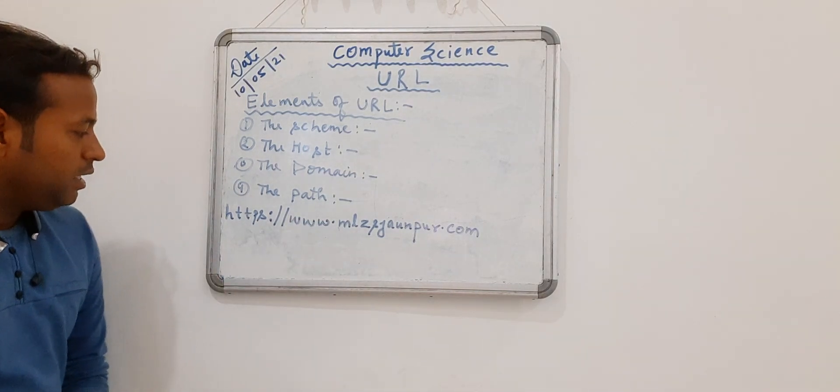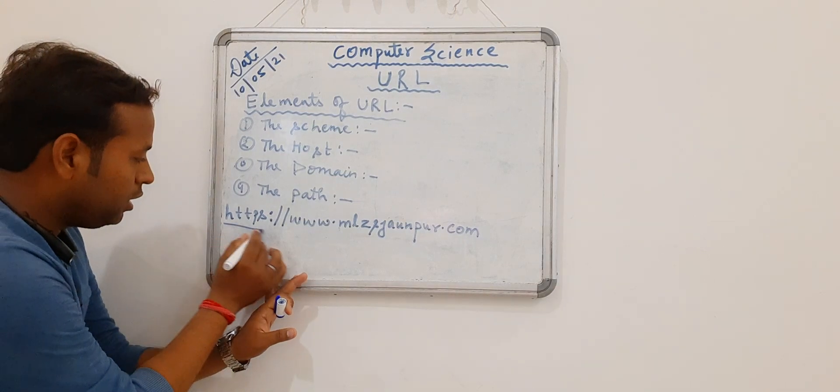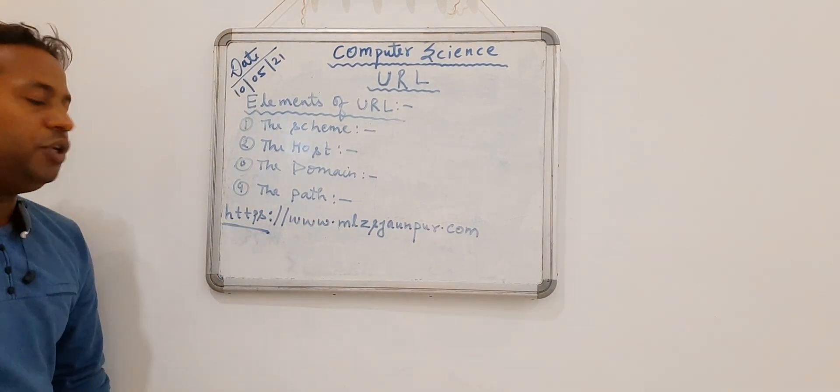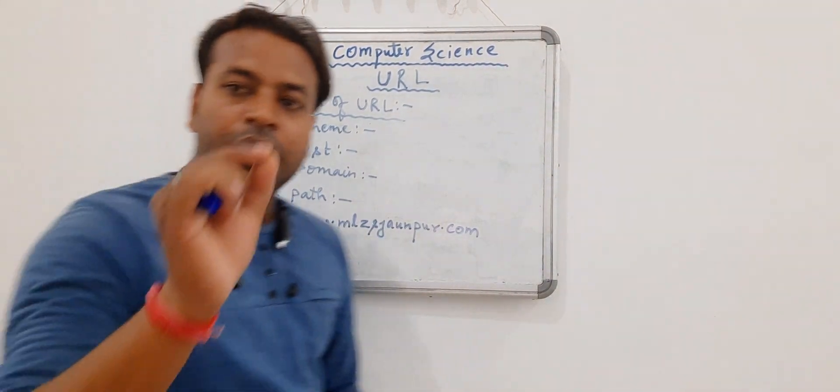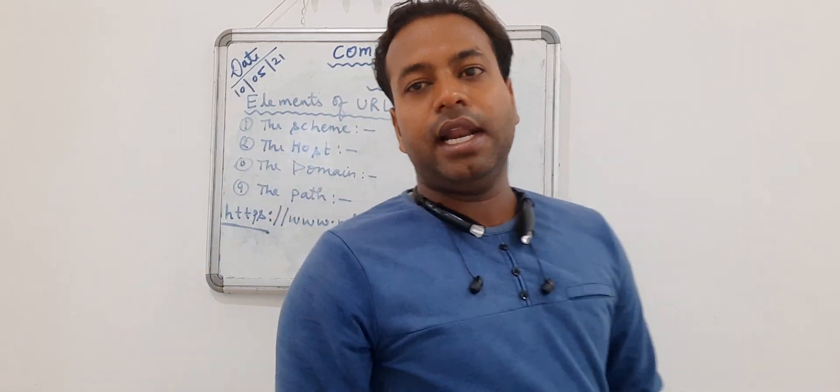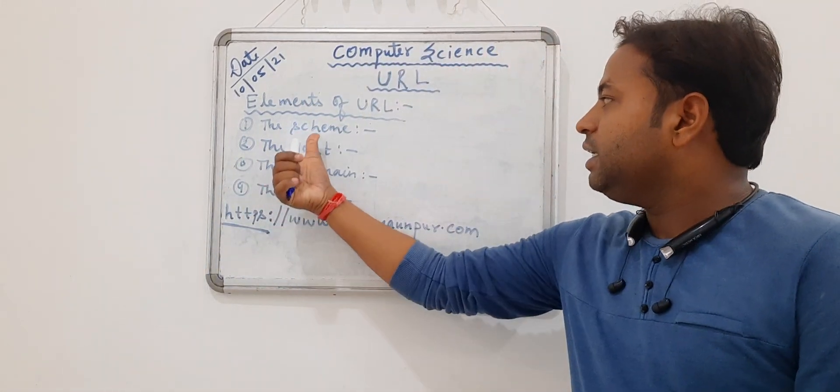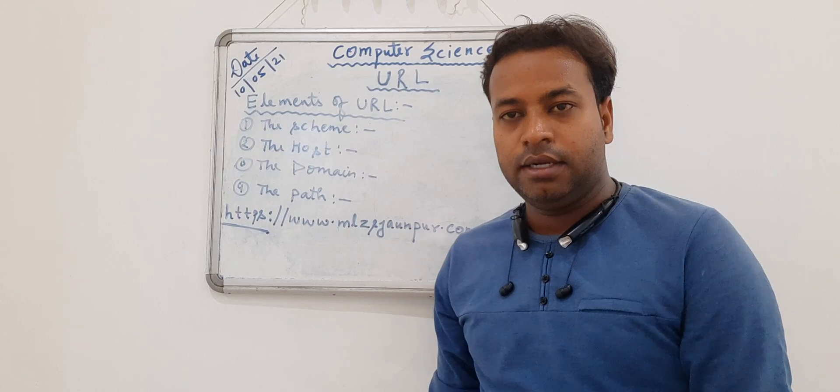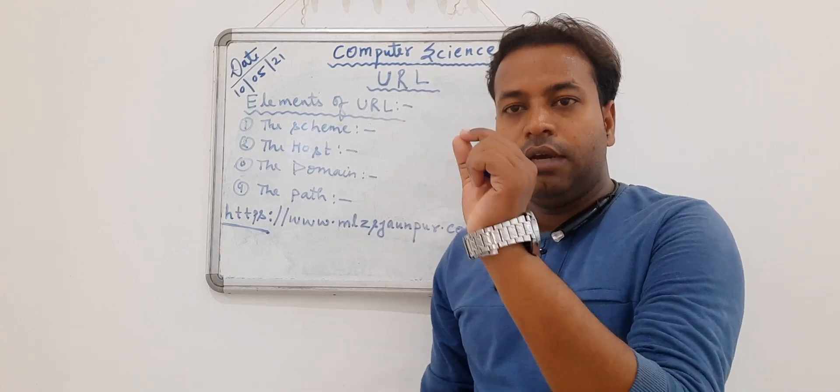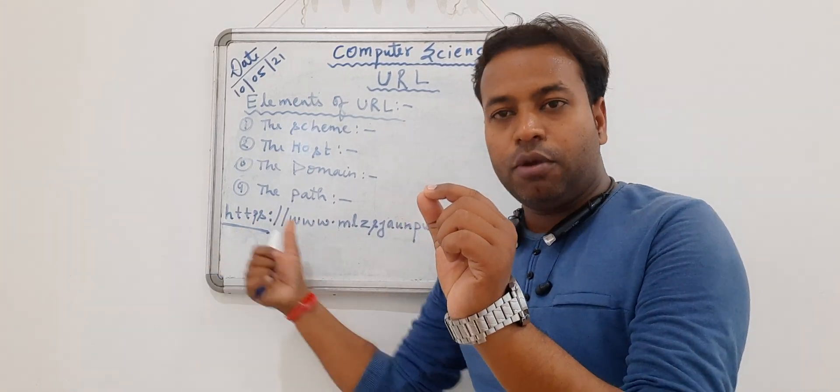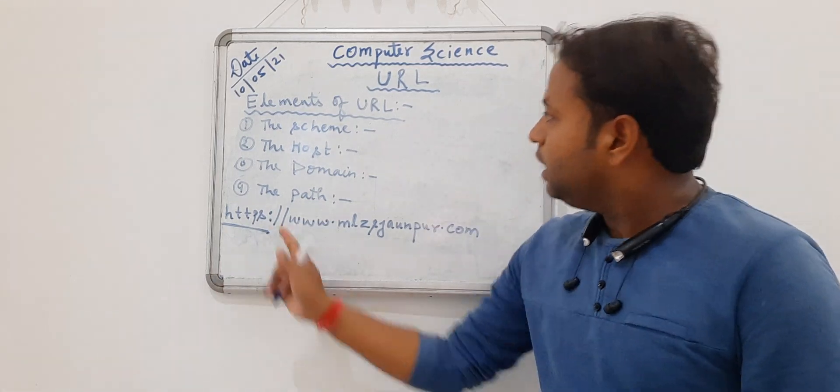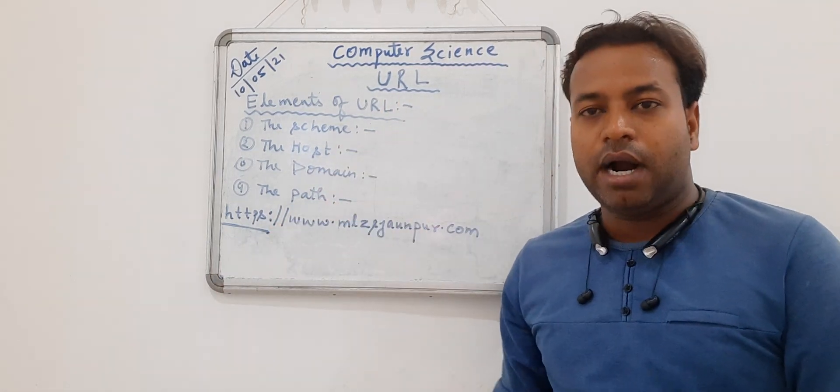So in this website, the first protocol which is applied on the URL address, the protocol which is applied on the URL address is called the Scheme part of the URL. The first protocol which is applied before the URL address is called the Scheme part.